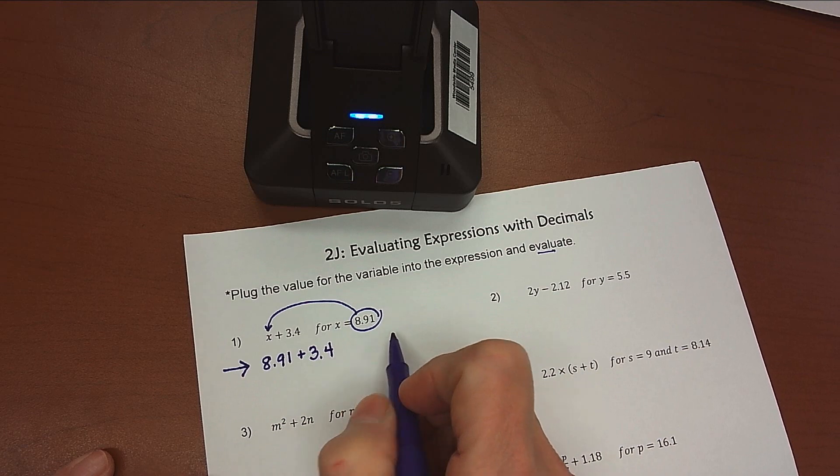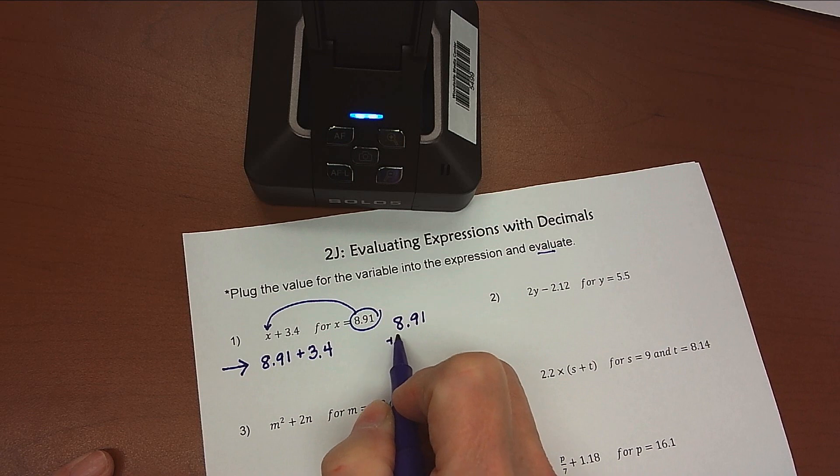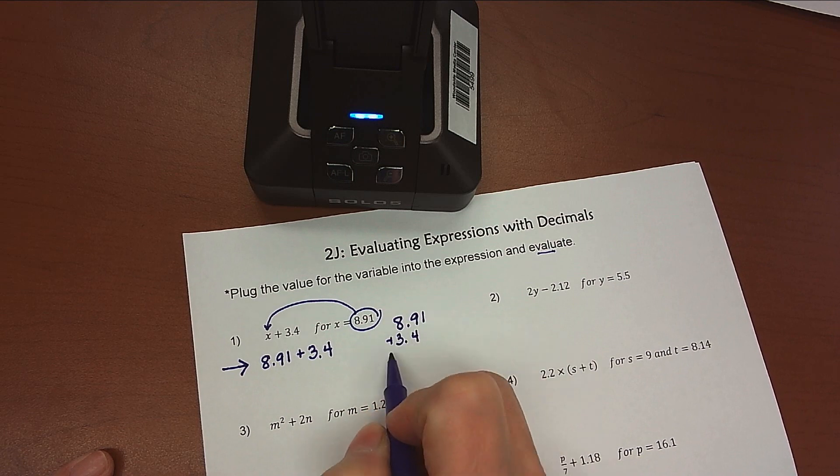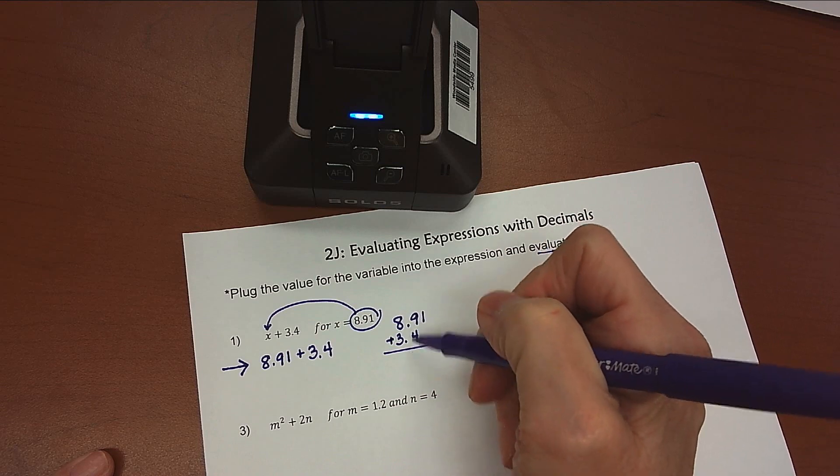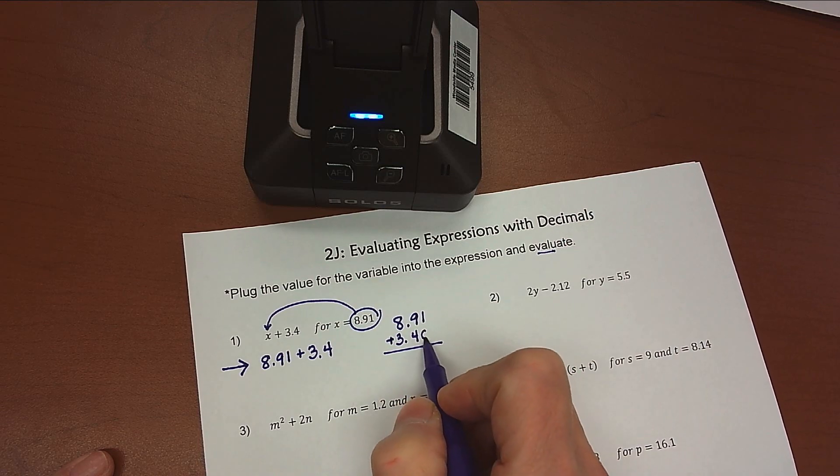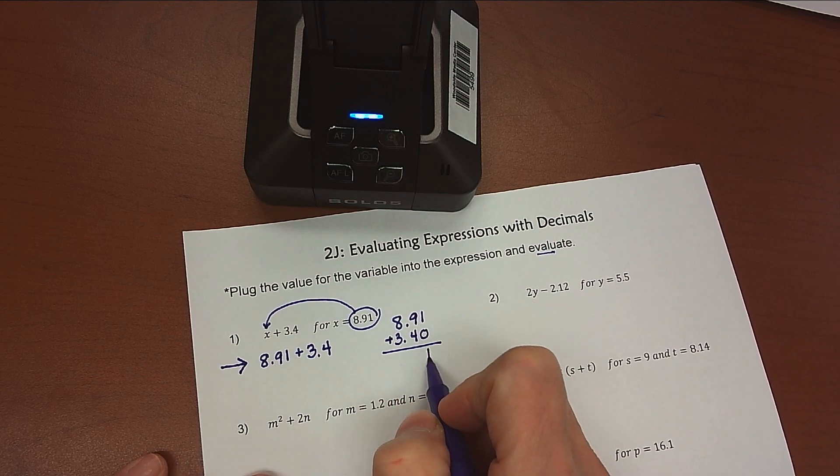My second step then to get full credit is to show the work. So 8.91 plus 3.4. Since this is an addition problem, I am stacking up the decimal points, and I'm filling in empty spaces with zeros, and then I'm just going to add straight down. 1 plus 0 is 1,